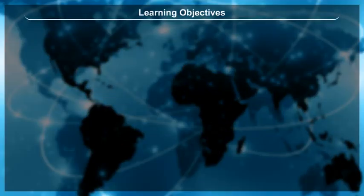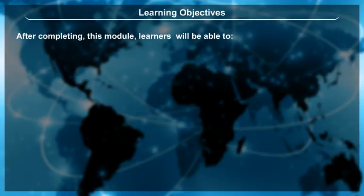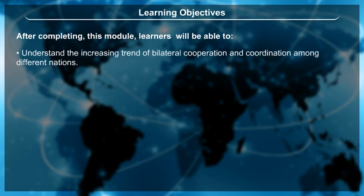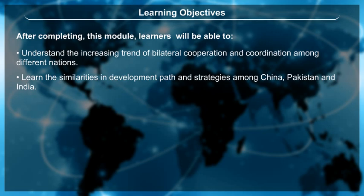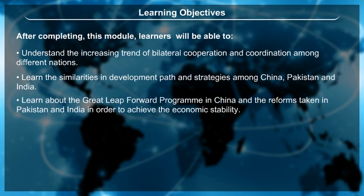Learning Objectives: After completing this module, learners will be able to understand the increasing trend of bilateral cooperation and coordination among different nations. They will learn the similarities in development path and strategies among China, Pakistan and India, and learn about the Great Leap Forward Program in China, along with the reforms taken in Pakistan and India in order to achieve economic stability.